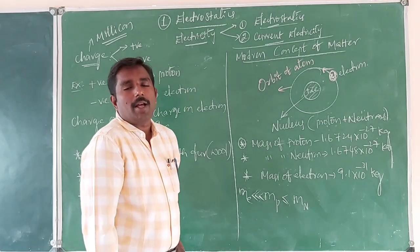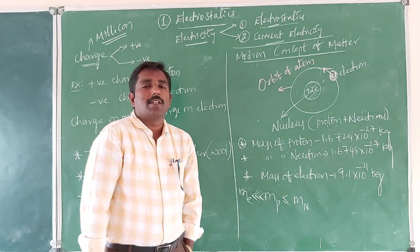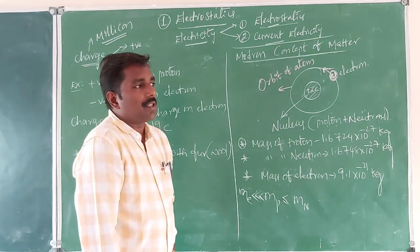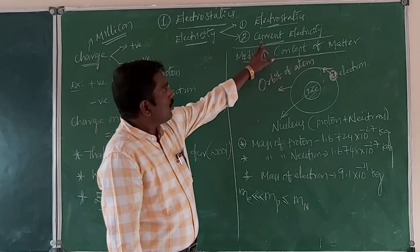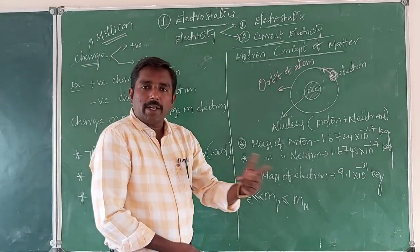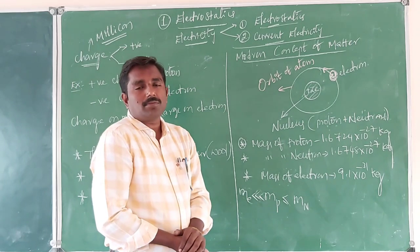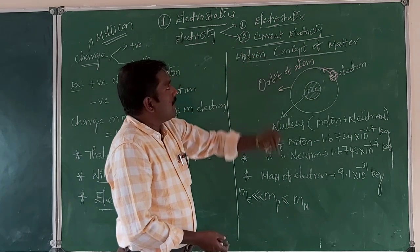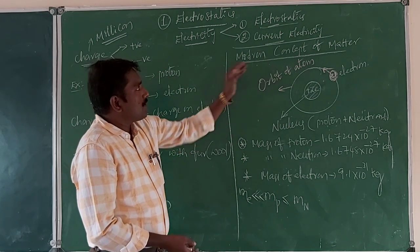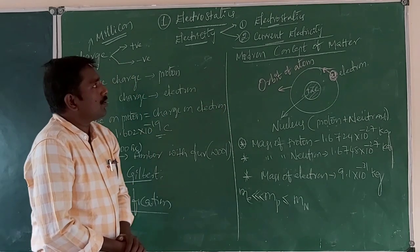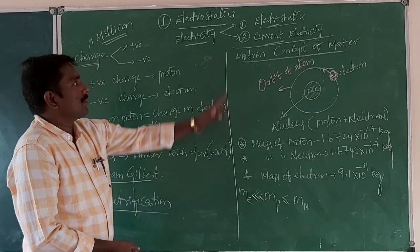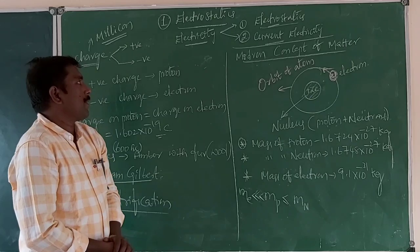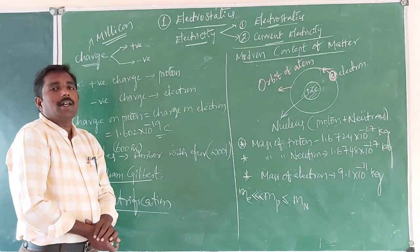Current electricity is the branch dealing with charges in motion. Current electricity is the second chapter and Electrostatics is the first. In this chapter we discuss Electrostatics — that is, charges at rest.